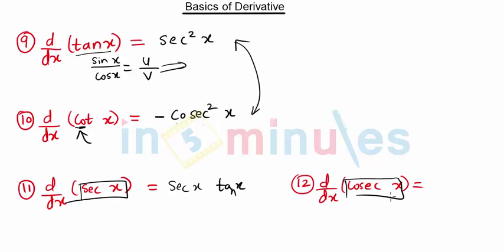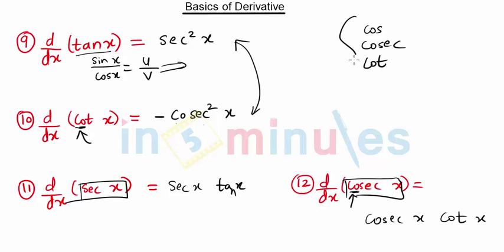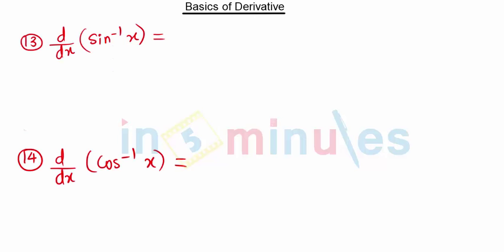The derivative of cosecant x is similar to that of sec x: instead of tan x, we have cot x. But since this derivative starts with 'co', and as taught — whenever a trig function starts with 'co' (cos, cosecant, cot), its derivative is negative. So the derivative of cosecant x is minus cosecant x times cot x. This is the simplest way to remember all these formulas.